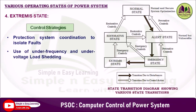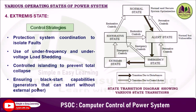Control strategies in the extremist state include protection system coordination to isolate faults, use of under-frequency and under-voltage load shedding, controlled islanding to prevent total collapse, and ensuring black start capabilities. Black start is the process of restoring a power system to operational condition after a total or partial blackout without relying on the external transmission network. Causes of blackout include natural disasters, equipment failure, cascading trips, cyber attacks, or grid instability. Since most power plants require external grid power to start, special black start units must be used.